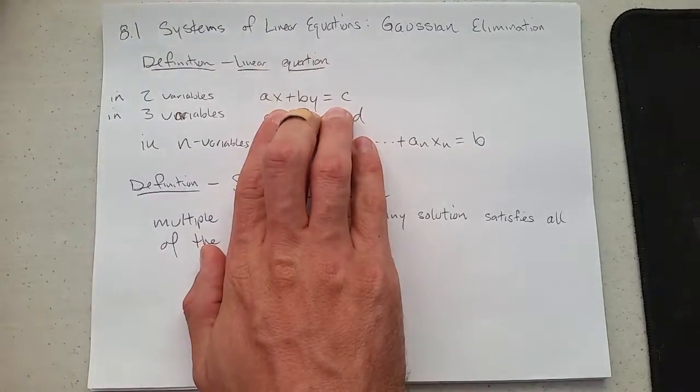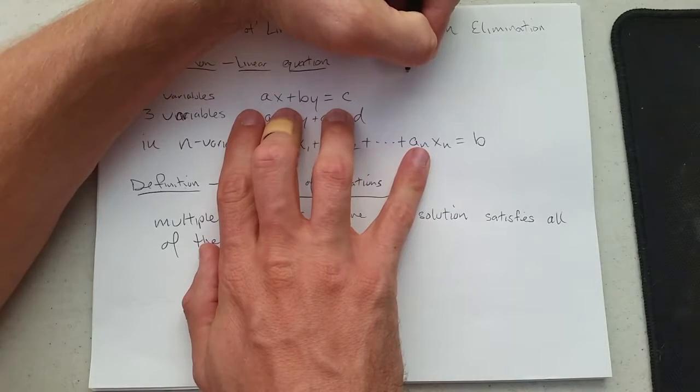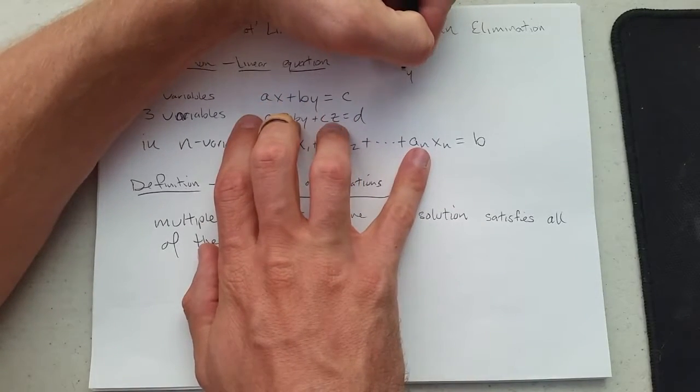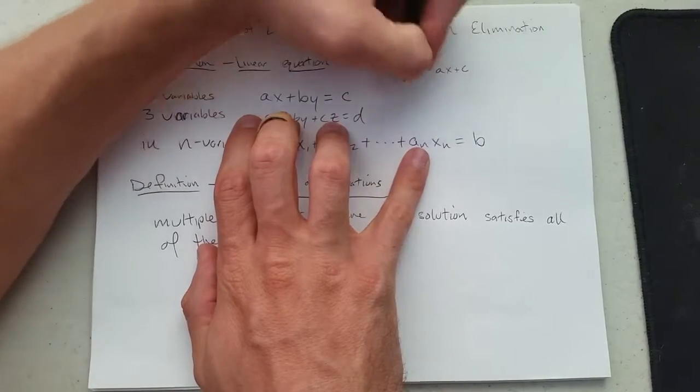How does this relate to the linear equation we are used to? If I solve for y, I'm going to subtract ax to the other side. So it's by equals negative ax plus c divided by b.